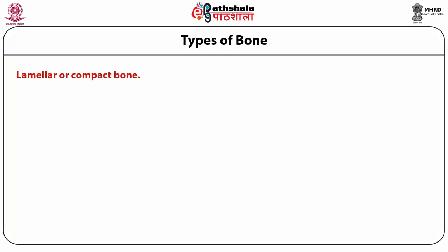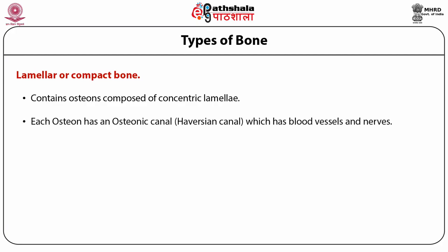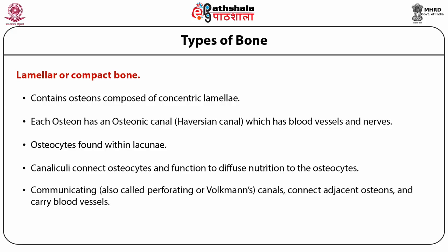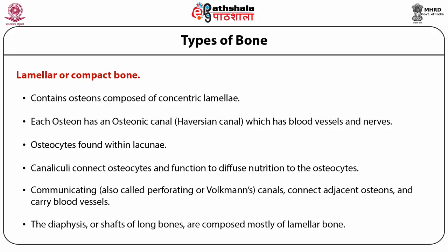Types of bone: first is lamellar or compact bone. Under this, it contains osteons composed of concentrated lamellae. Each osteon has an osteonic canal, that is the Haversian canal, which has blood vessels and nerves. Third, osteocytes are found within lacunae. Fourth, canaliculi connect osteocytes and function to diffuse nutrition to the osteocytes. Communicating canals, also called perforating or Volkmann's canals, connect adjacent osteons and carry the blood vessels. Lastly, the diaphysis or shafts of long bones are composed mostly of lamellar bone.